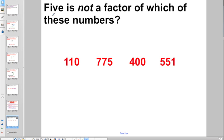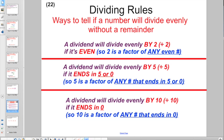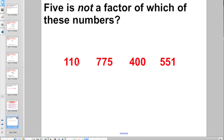So let's try another one. 5 is not a factor of which of these numbers. Well, if we need to go back and think about the divisibility rules from Lesson 22. A dividend will divide evenly by 5 if it ends in 5 or 0. So 5 is a factor of any number that ends in 5 or 0.